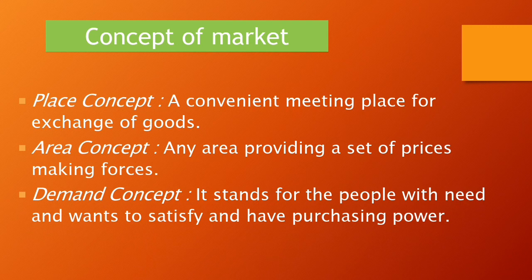These three concepts — place concept, area concept, and demand concept — reveal several important features. First, a meeting place for exchange is a matter of convenience. Second, buyers and sellers are the two sides of a market, like demand and supply. Third, meeting of minds is more important than face-to-face meeting to create a market where one price exists for one product, set by the free play of demand and supply. It is also assumed there is free competition among sellers and buyers, and in the free market system, the relative strength of supply and demand forces determines the price.